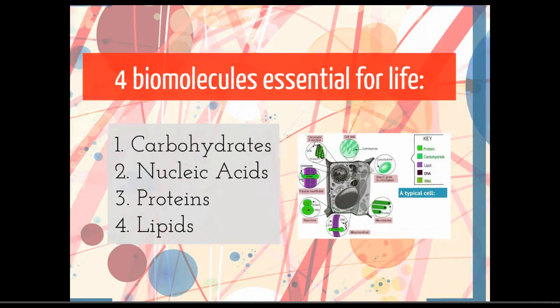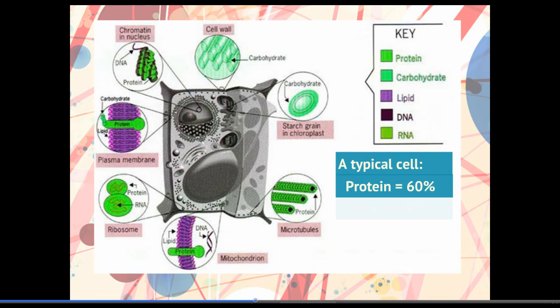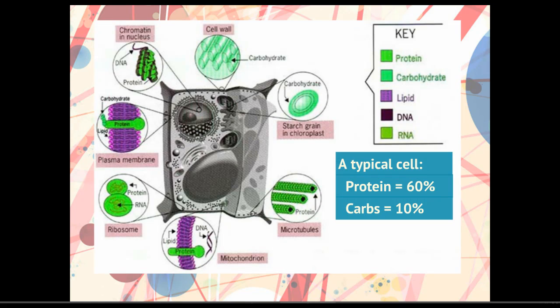I want to show you a typical cell. You don't have to memorize these numbers but this is just to give you a sense. A typical cell will be about 60% protein, and if you look at the protein, it's spread throughout the cell in the cytoskeleton, embedded in different organelles and ribosomes throughout the cell. About 10% of the cell is carbs. Now I think we all think of carbs as something we have a lot of, but carbs provide us energy and we use them up quickly.